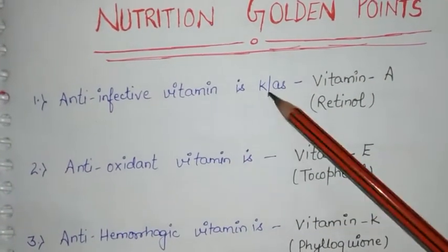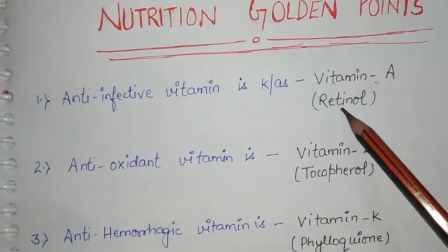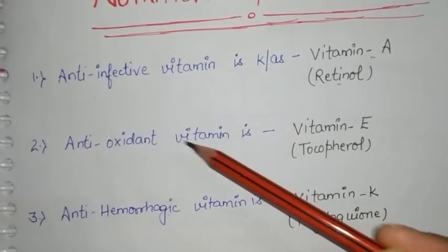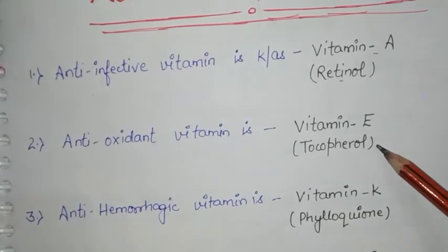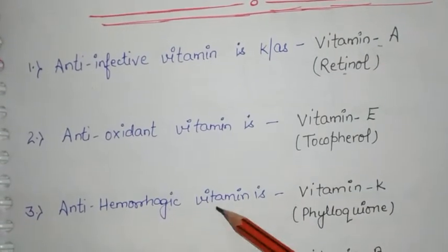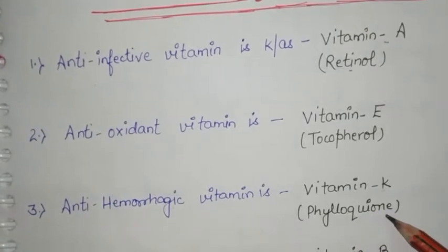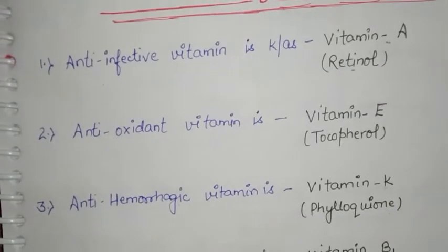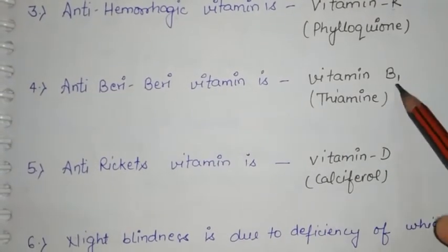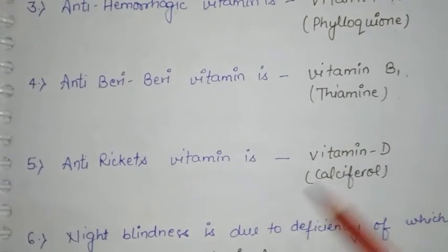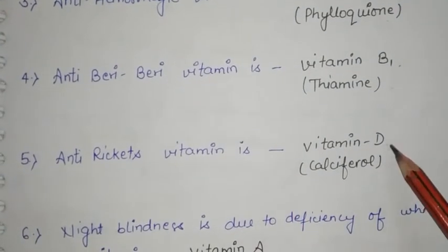Anti-infective vitamin is known as vitamin A, i.e. retinol. Anti-oxidant vitamin is vitamin E, tocopherol. Anti-hemorrhagic vitamin is vitamin K, phyloquinone. Anti-periberi vitamin is vitamin B1, thiamine. Anti-rickets vitamin is vitamin D, calciferol.